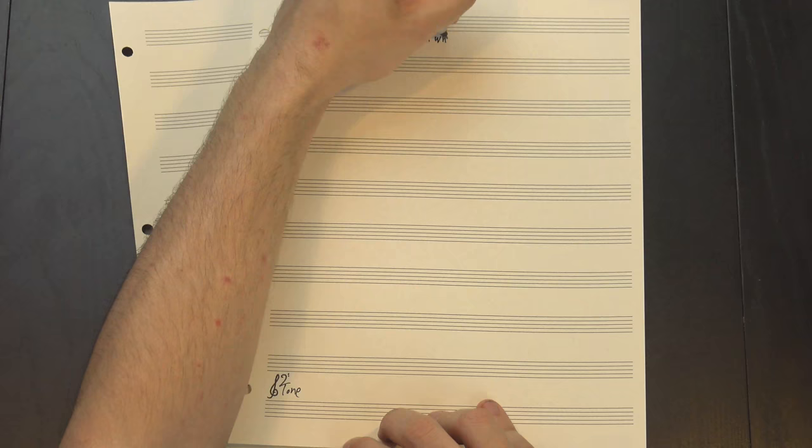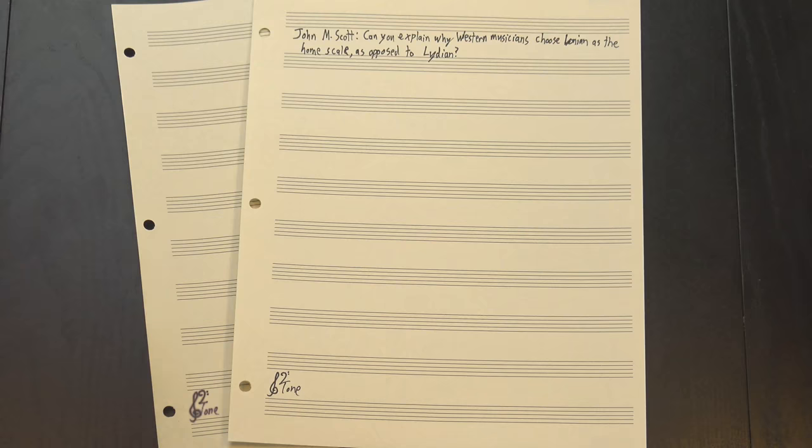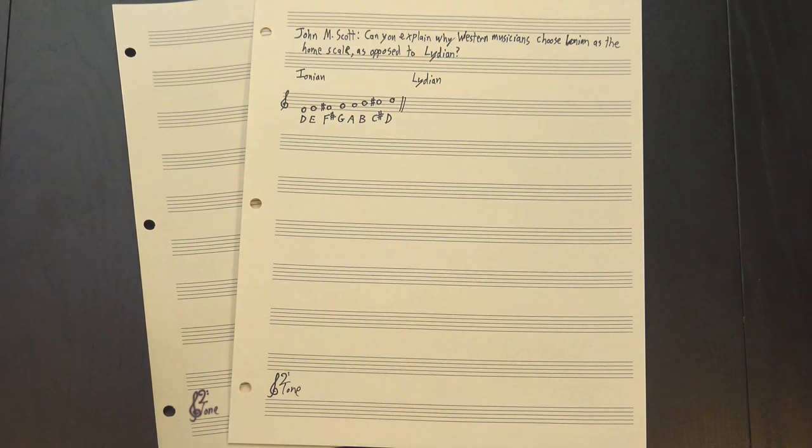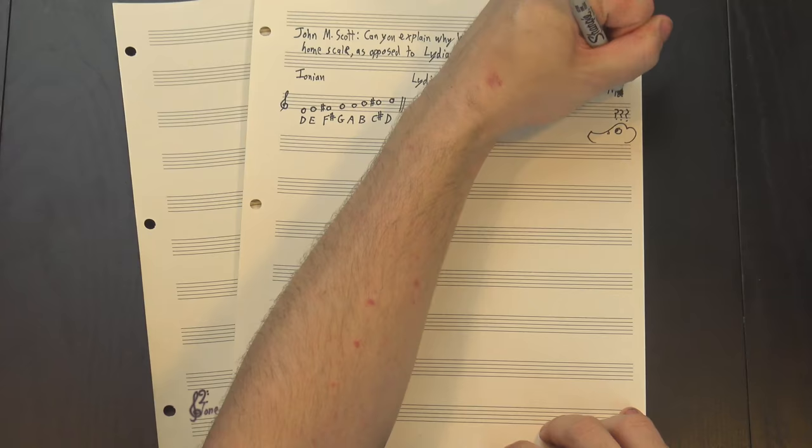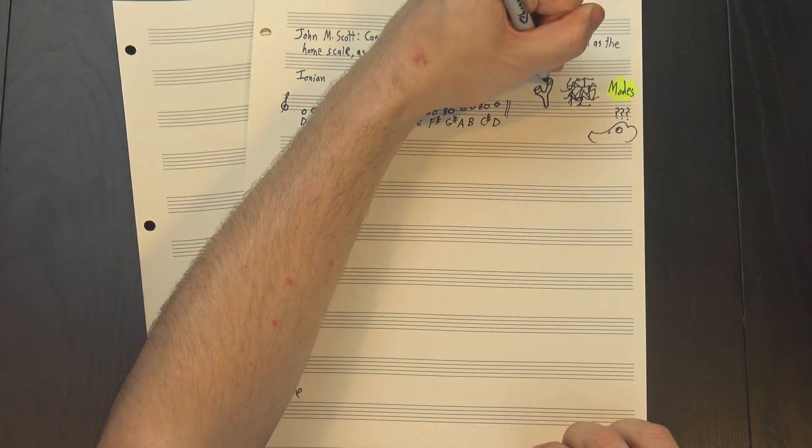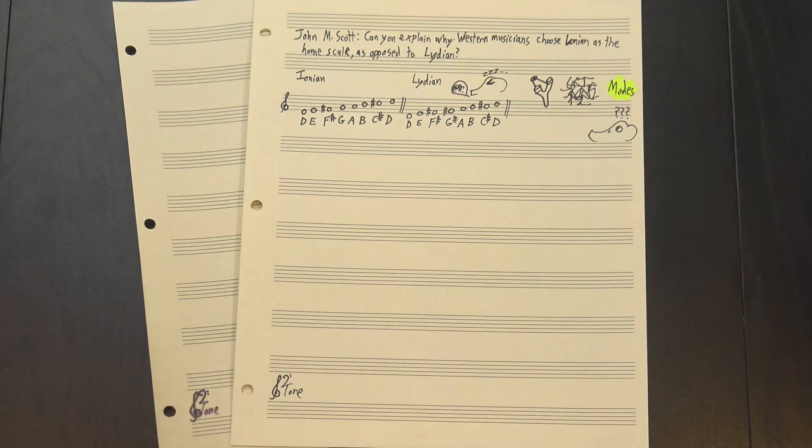John M. Scott asked, can you explain why western musicians choose Ionian as the home scale, as opposed to Lydian? So for those of you who don't know, Ionian is another name for the major scale, and Lydian is a major scale with a raised fourth degree. If you want to know more about them, you can check out our video on modes, but to answer the question, I think it all comes down to tension. Traditional western harmony is all about tension and release, and Lydian has a very resolved sound. We can see this by looking at the most dissonant interval, the tritone.